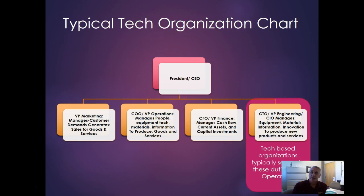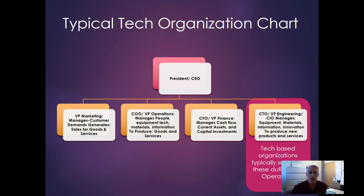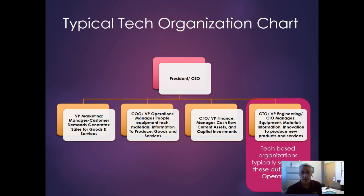Let's take a closer look at tech organizations. You typically have a president or CEO function that oversees what's going on in the company and interfaces with investors. Underneath that you find different types of operations — a COO or Chief Operating Officer at the executive level, or VP of Operations. You're managing people, equipment, technologies, materials, information, products, goods, or services. Marketing really handles interactions between customers and demands, while the CFO manages cash flow, assets, and capital investments.